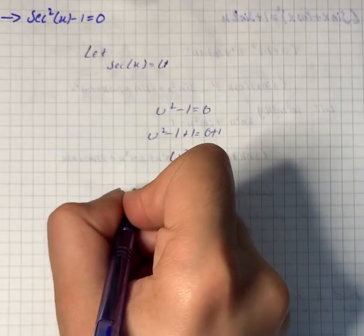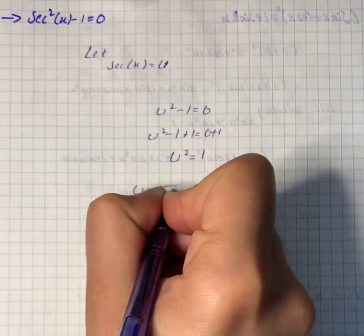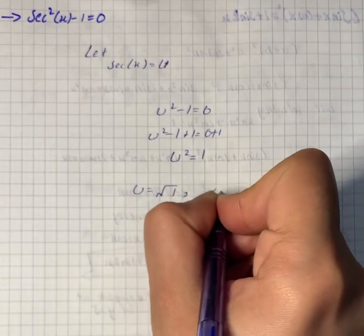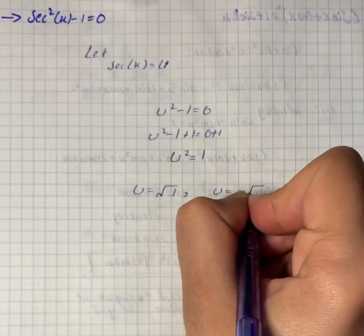Now we will take square root on both sides. It will give us square root of 1 and u is equal to minus square root of 1.